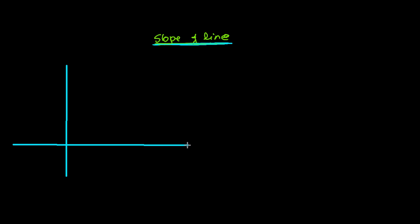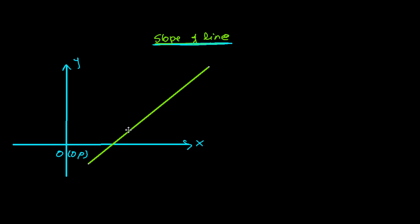To understand the slope of the line, let me first draw the coordinate axis. This is my x-axis and this is my y-axis, and this is the origin having the coordinate (0, 0). Now suppose I have a line — let's call it line L. Line L is making an angle of theta with the positive x-axis, measured in the anti-clockwise direction. This is the clockwise direction, and this is the anti-clockwise direction.